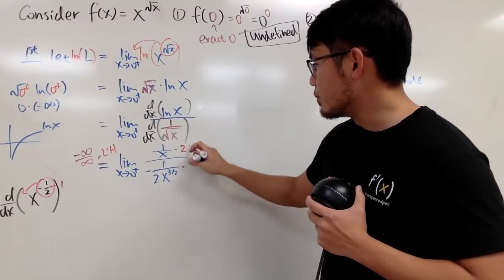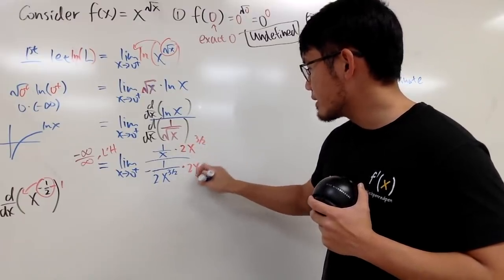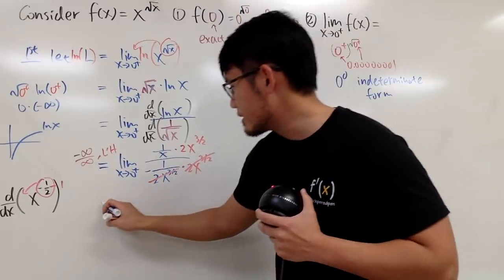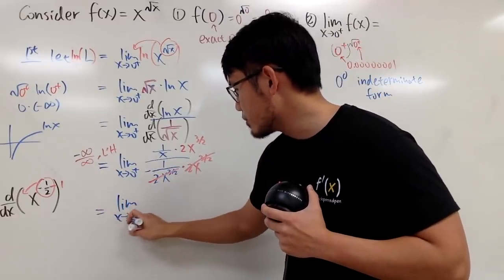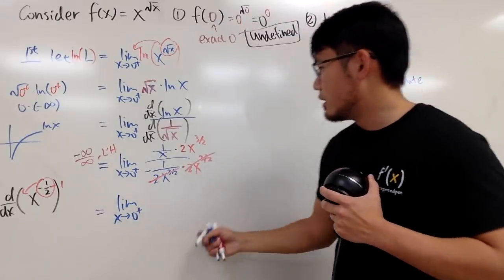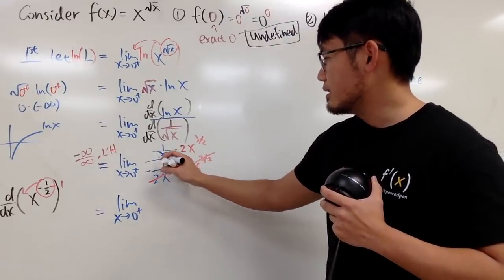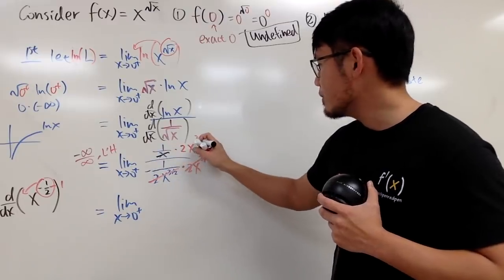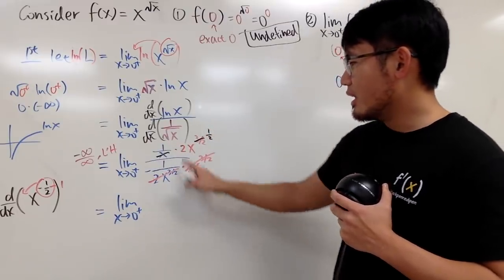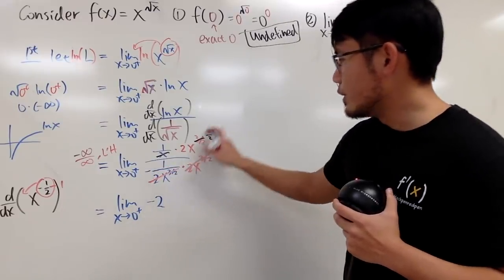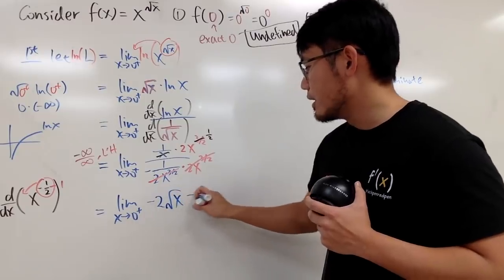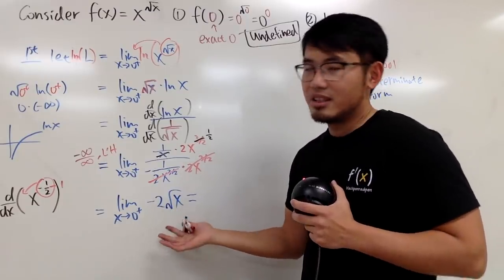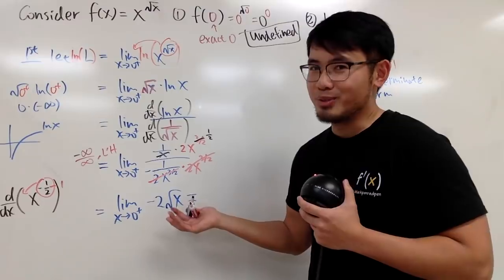On the bottom, terms cancel. On the top, we have the limit as x approaching 0 plus. I have x to the 2 over 2 on top and x to the 3 over 2 on the bottom — canceling gives x to the 1 half power, meaning square root of x. So we get negative 2 times square root of x. When I plug in 0, negative 2 times square root of 0 is just 0. Negative 0 is still 0.